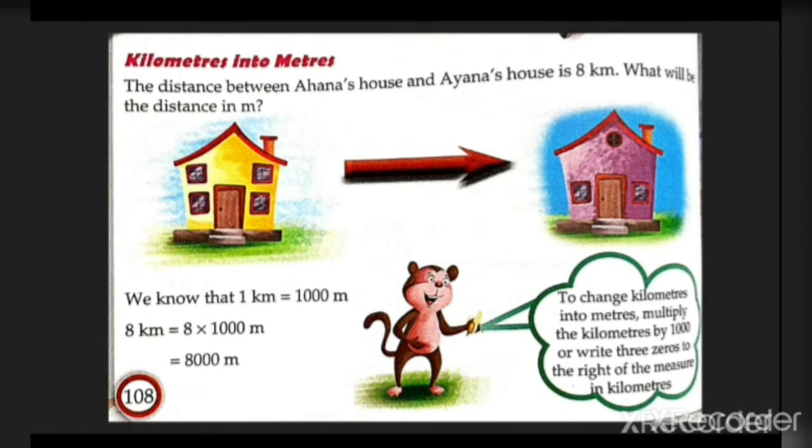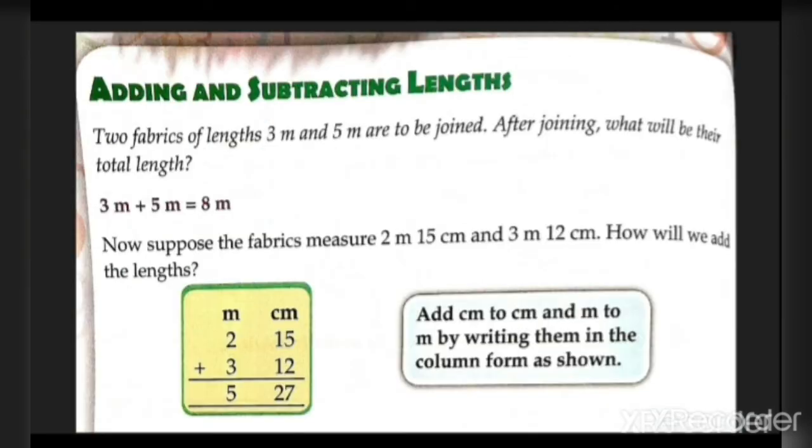The distance between Aana's house and Ayana's house is 8 kilometers. What will be the distance in meters? One km is 1000 meters, so 8 km is 8 times 1000 meters equals 8000 meters.